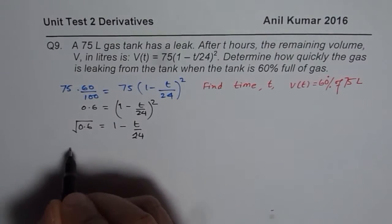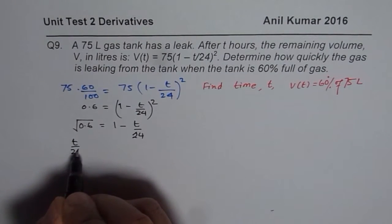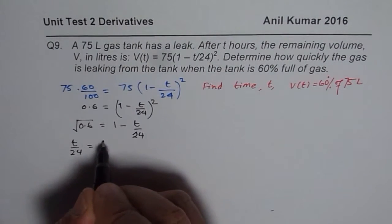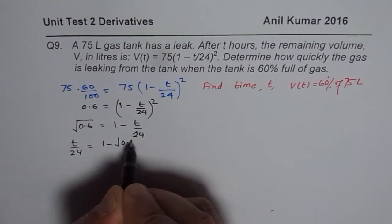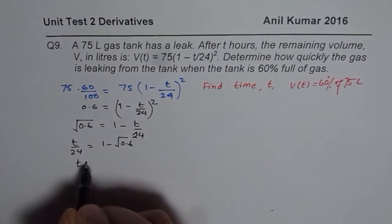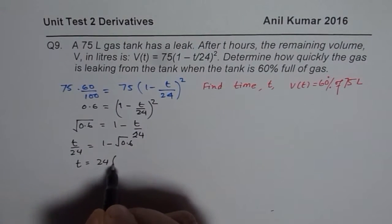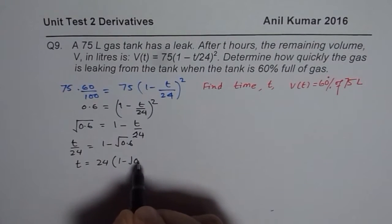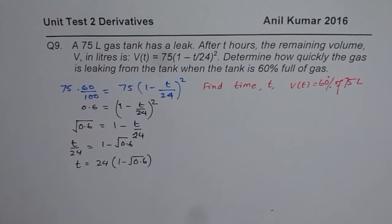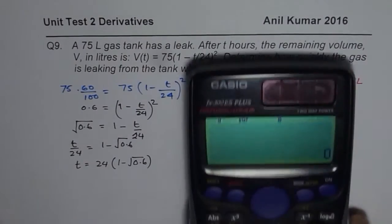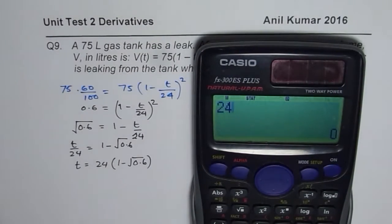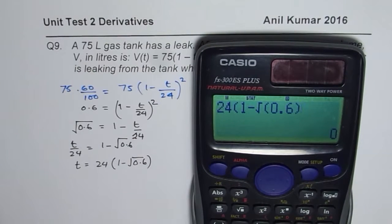Square root of 0.6 is equal to 1 minus T over 24. So T over 24 could be equals to T over 24 is equals to 1 minus square root of 0.6 or T is equals to 24 times 1 minus square root of 0.6.